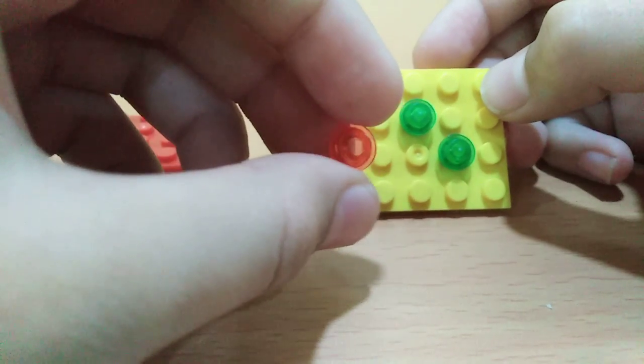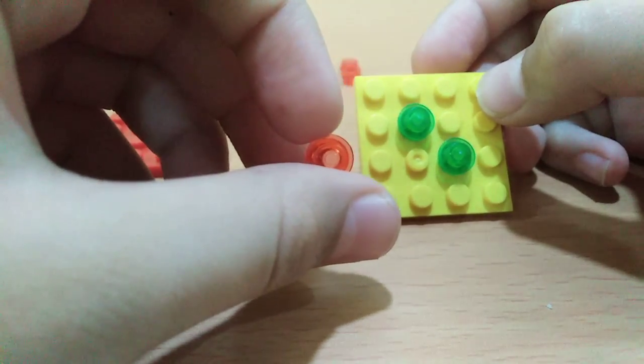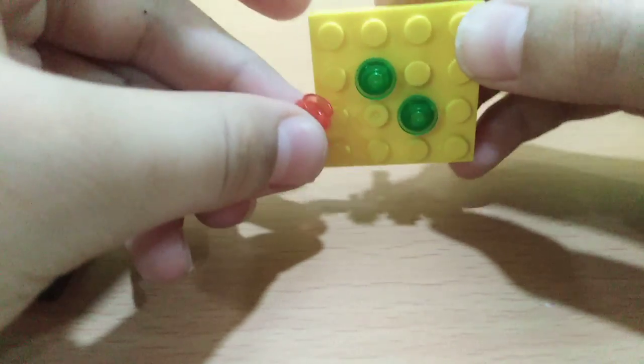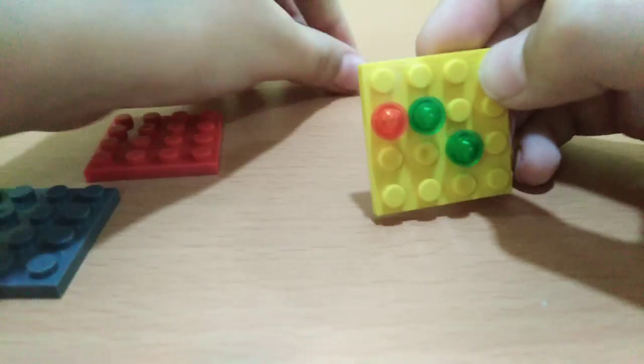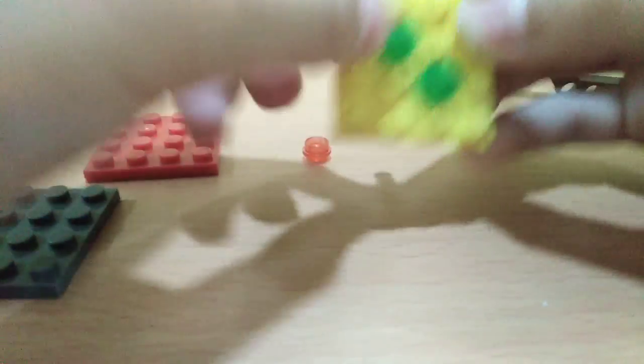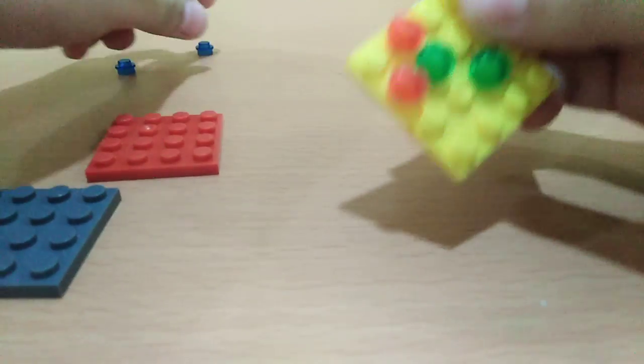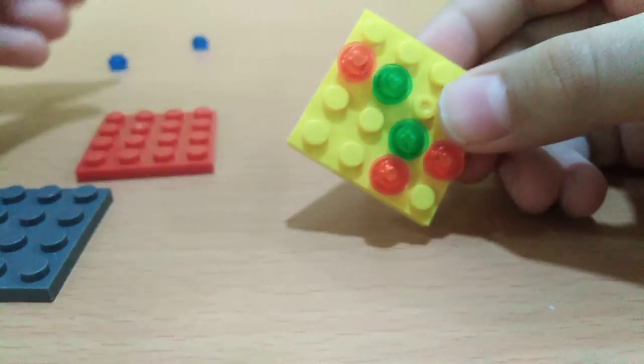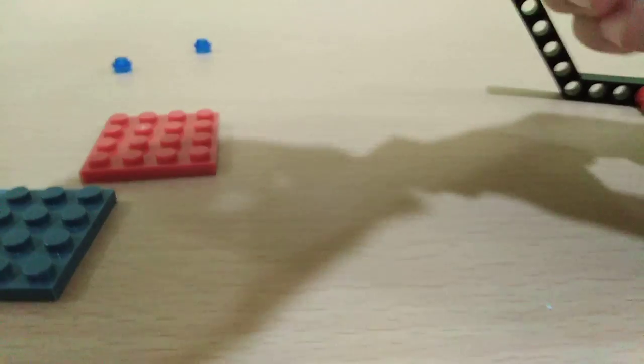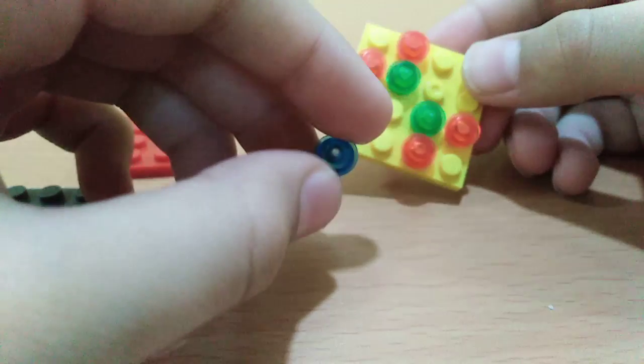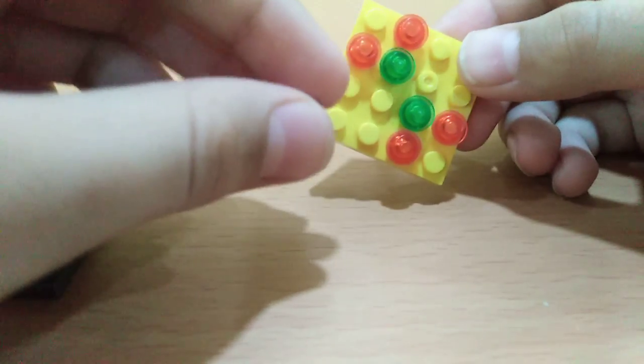And here I have a two one by one red transparent piece. Okay, I'll put this right here and another at the other side, right, and like this. Now I have a one by one green or blue piece and I'll put it right here.